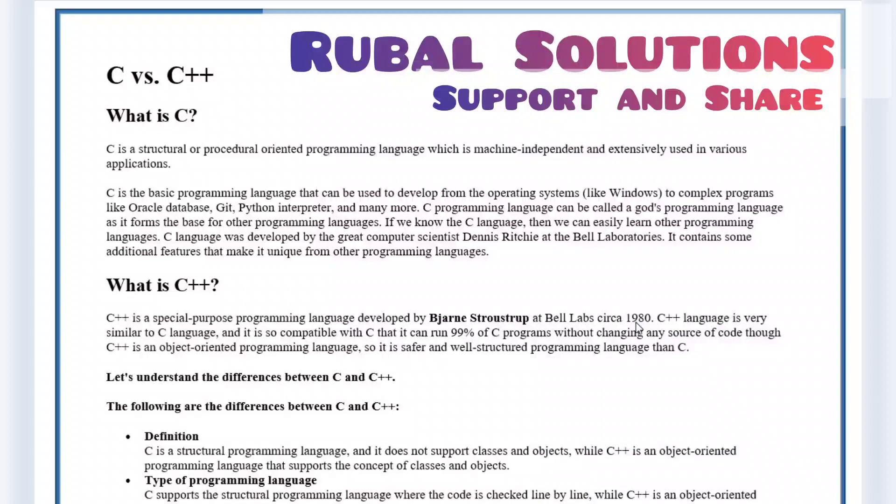Let's get started with C versus C++. If you know C, you will get to know what C is. C is a structural or procedural programming language which is machine independent and extensively used in various applications.